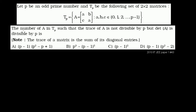In problem number 43, they ask us for the number of matrices A in the set such that the trace of A is not divisible by P, but the determinant of A is divisible by P. They tell us the trace of a matrix is the sum of its main diagonal entries — so it's only the sum of the main diagonal that gives you the trace.